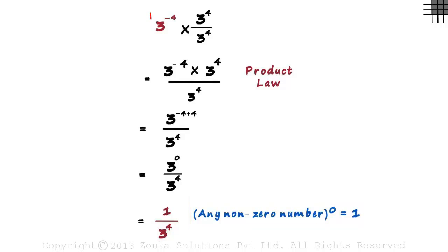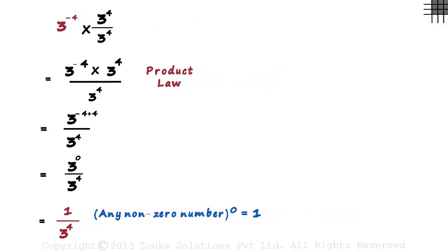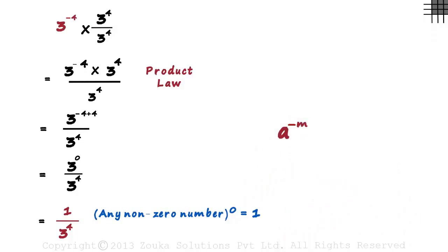This was our original number: 3 raised to minus 4. And we got the answer as 1 divided by 3 raised to 4. So all we did is change the sign of the exponent and wrote it under 1. We can generalize it as a raised to minus m equals 1 divided by a raised to m.